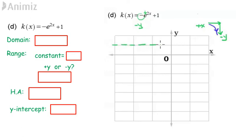Draw the horizontal asymptote at y equals 1. Then plot the y-intercept (0, 0). Draw a curve below y equals 1 and extend to negative infinity. Label the graph as function k(x).